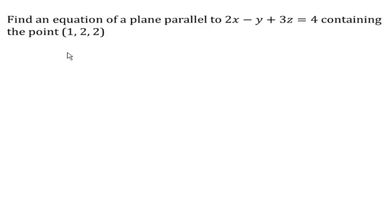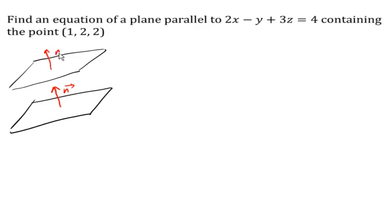So if two planes are parallel, then you can sort of imagine, so let's see if we can draw two parallel planes here, that the normal vector to this plane and the normal vector to this plane are going to have to point in the same direction if the planes are parallel. So because this second plane is going to have the same normal vector,